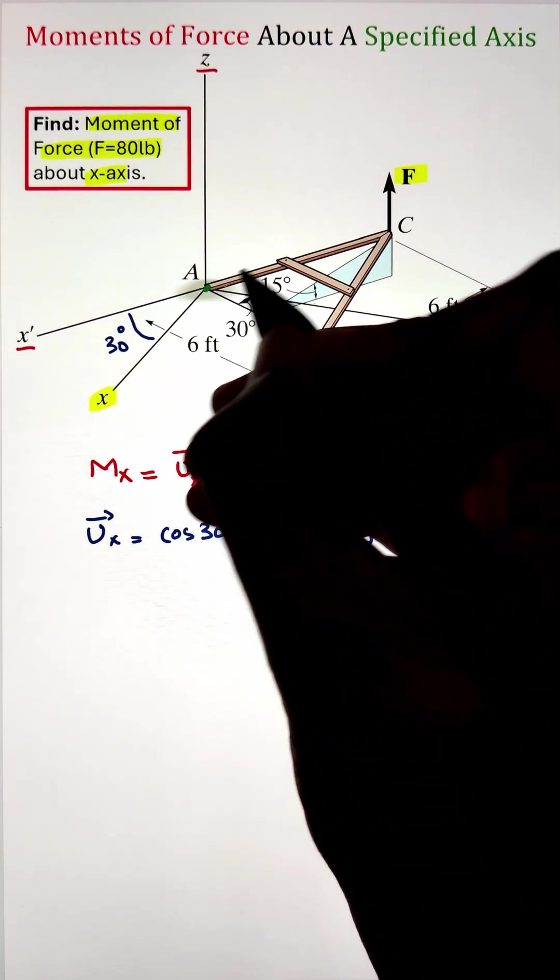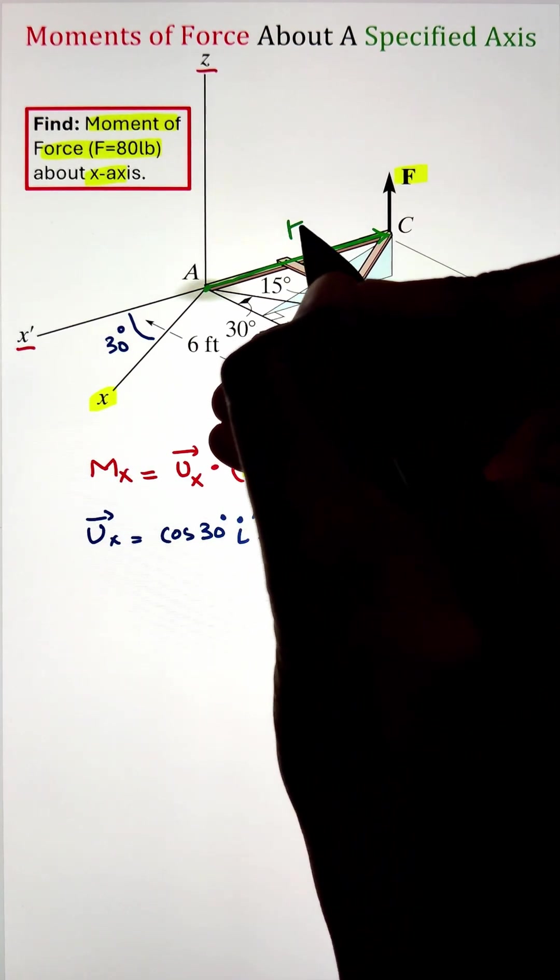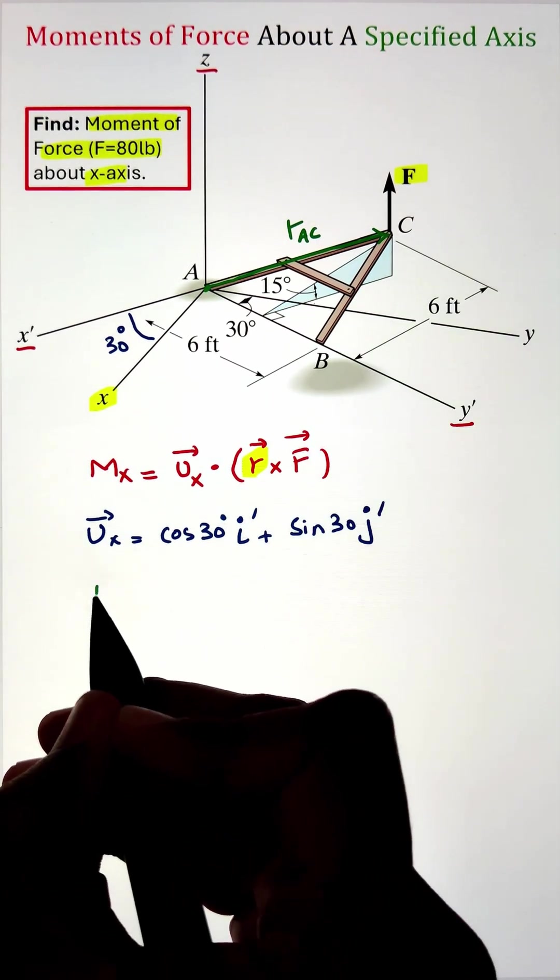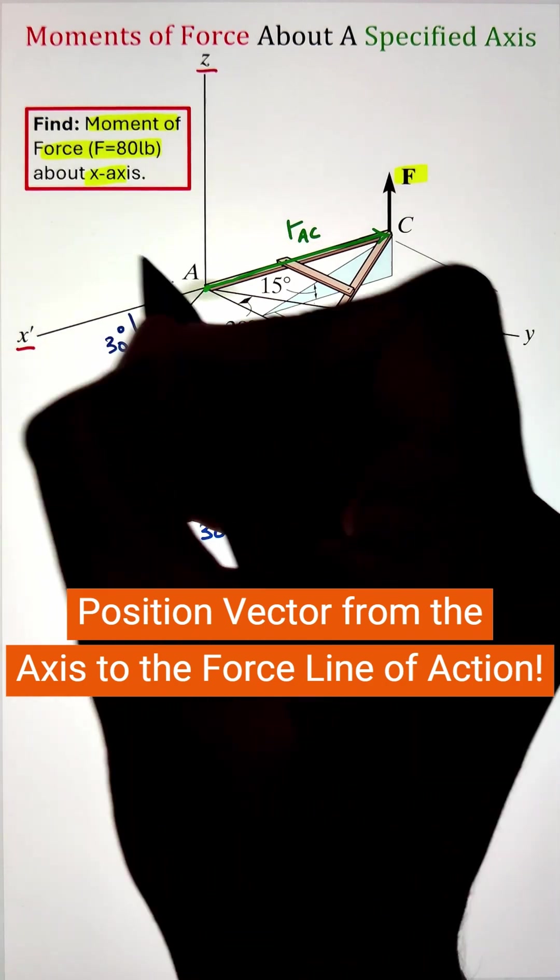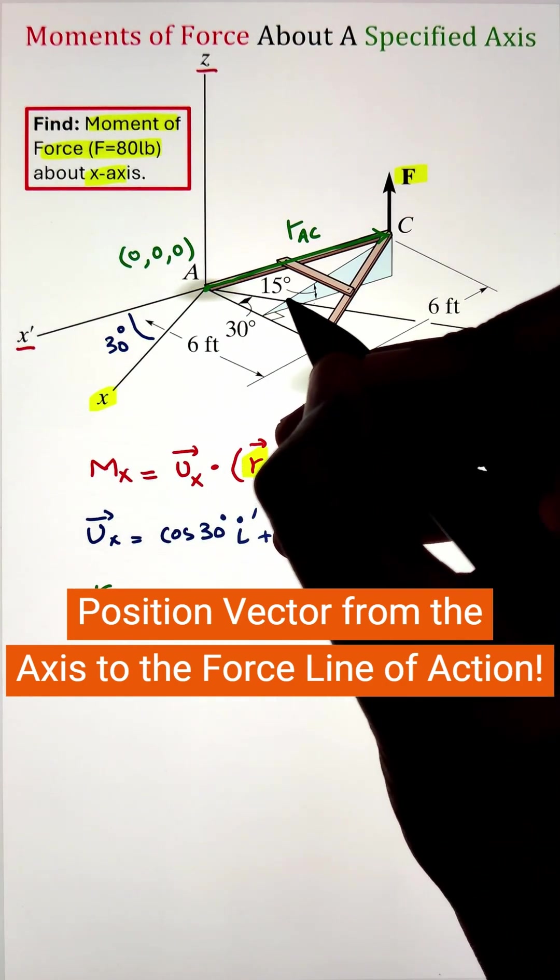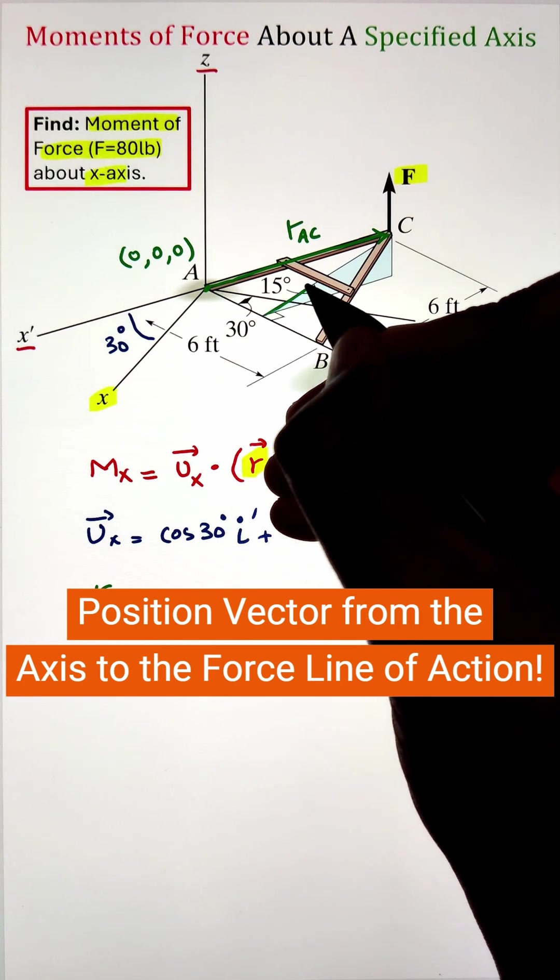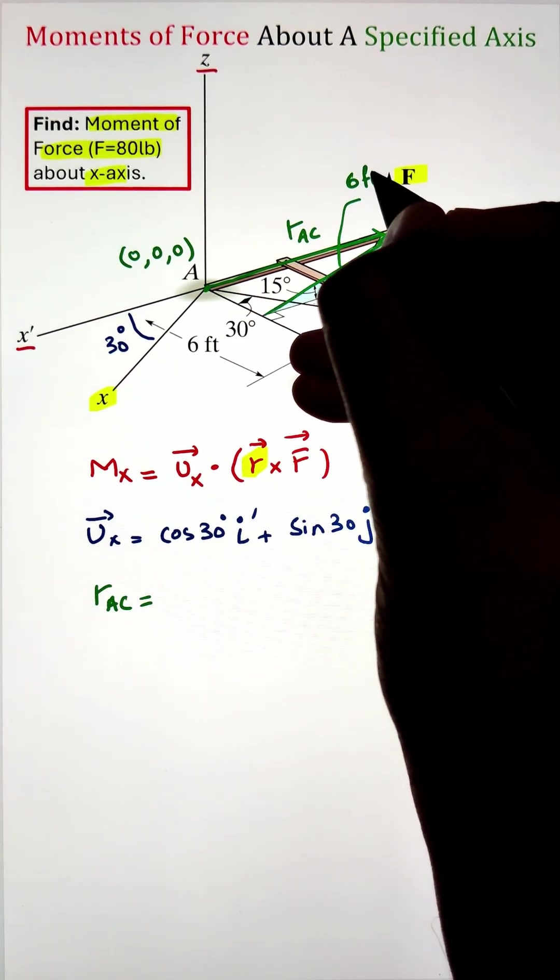Next comes the position vector. Since the idea of the position vector is it should be on the axis, in this case I'm selecting point A as it lies on the axis as well, whereas it should be on the line of action of the force. So in this case we are considering point C as the head, so the required position vector in our case will be r_AC.